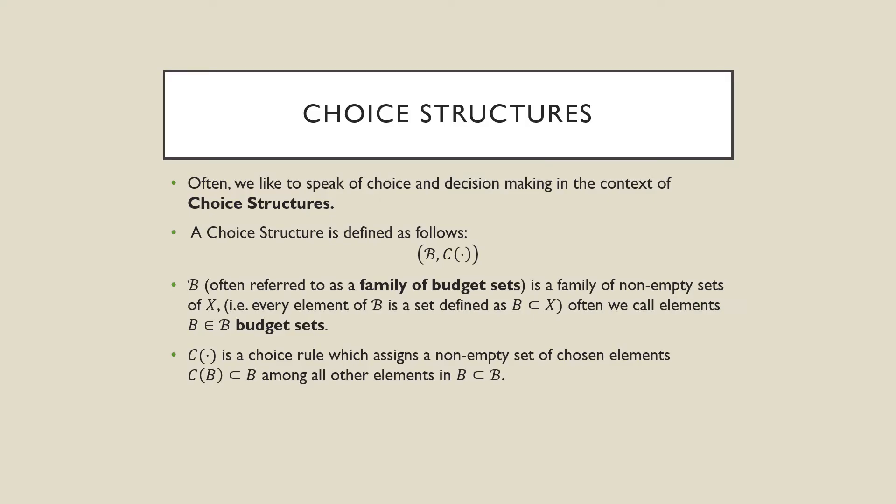So oftentimes we like to speak of choice and decision making in the context of choice structures. A choice structure is defined as follows, where script B is our family of budget sets and C is a choice rule. Script B is a family of non-empty sets on our commodity space, meaning every element in script B is defined as B — a particular budget or set of alternatives on X — and we call these little b in B a budget set. C is a choice rule which assigns a non-empty set of chosen elements of B as a subset of this actual budget set.